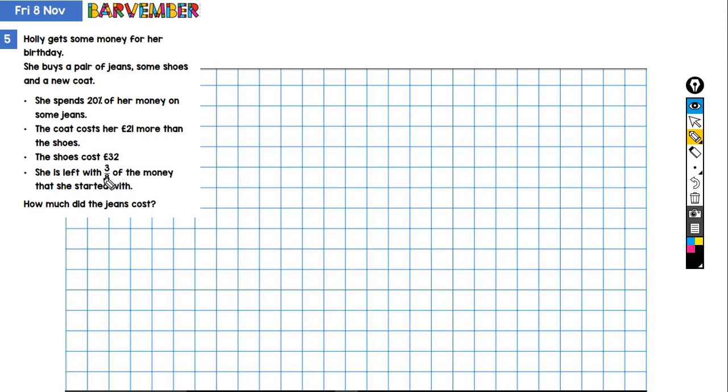For example, if the only fraction that was mentioned was eighths, I might then choose to divide my bar into eight equal size pieces. However, we've also got 20%, which of course is two tenths. So this is going to be different to this.